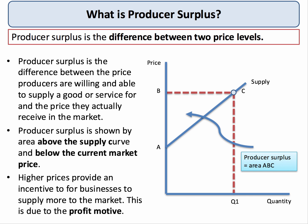So what is producer surplus? Producer surplus is essentially the difference between two price levels — the difference between the price that producers and suppliers are willing and able to supply a good or service for, and the price they actually get in the market. It is shown by the area above the firm's supply curve and below the prevailing or current market price.